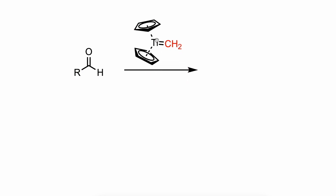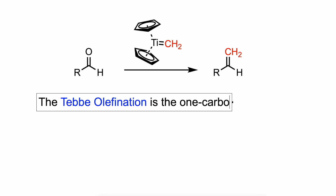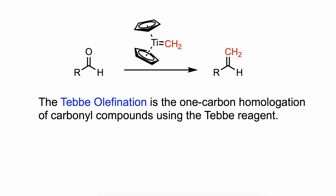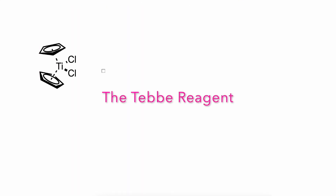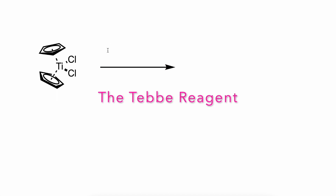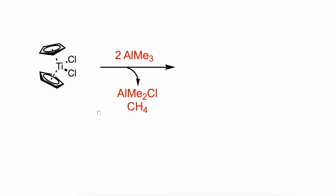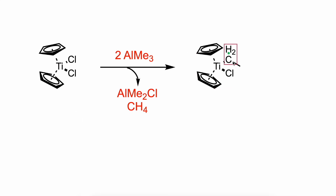Hello everyone. In this video I'm going to talk about the Tebbe olefination. The Tebbe olefination is the one-carbon homologation of carbonyl compounds. The Tebbe reagent is commercially available, but it can be prepared from the reaction between titanocene dichloride with two equivalents of trimethylaluminum in toluene. This generates a methylene-bridged titanium-aluminum complex often referred to as the Tebbe reagent.